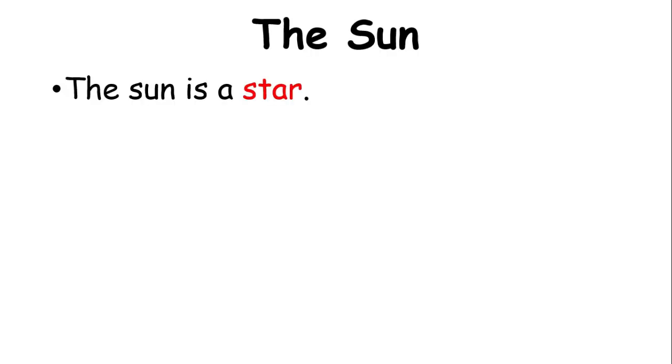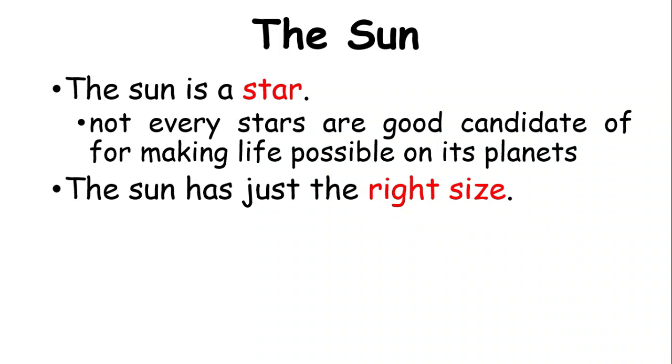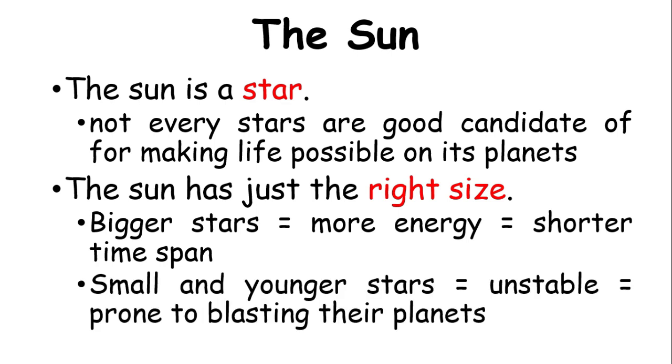First, we have the Sun. The Sun is a star, and there are millions of stars in space. However, not every star is a good candidate for making life possible on its planet. What makes the Sun a good candidate? Number one, the Sun has just the right size. Some bigger stars have more energy because they are huge, but it also means they have shorter lifespans, which makes life impossible to form on their planets. Life takes time to form. Small and younger stars are unstable. They are prone to blasting their planets with bursts of radiation.